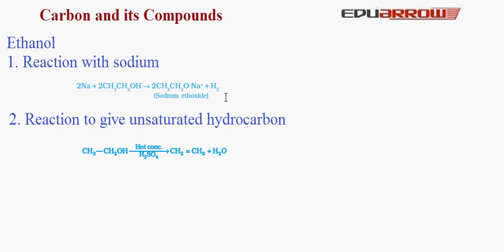Second, its reaction to give an unsaturated compound. In the presence of sulfuric acid, ethanol converts into an unsaturated compound. For example, CH₃CH₂OH loses H₂ to form CH₂=CH₂, that is ethene. The single bond between carbon atoms is converted to a double bond. Water is also produced. Since water is removed from the ethanol molecule, sulfuric acid is known as a dehydrating agent — the agent that removes water from a molecule.